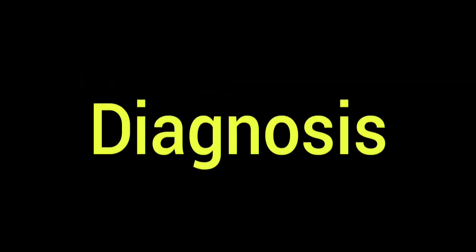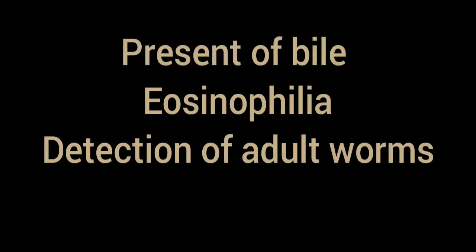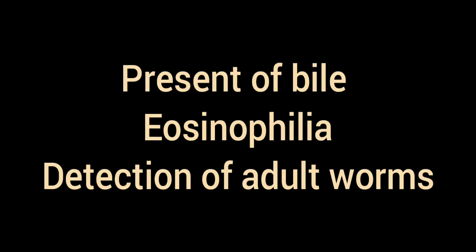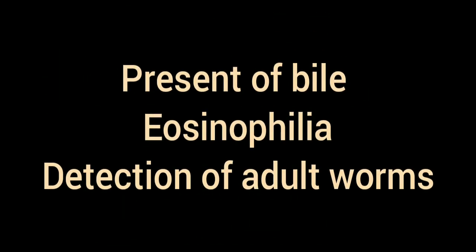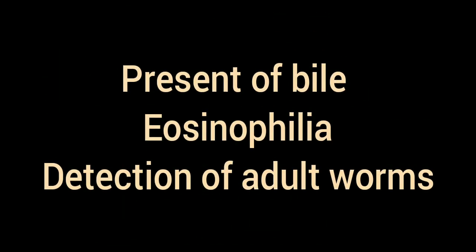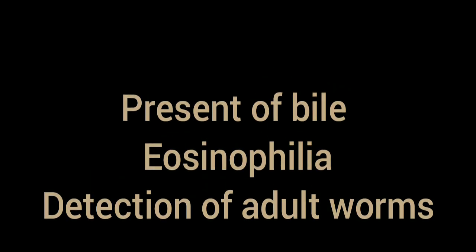Diagnosis: Methods include stool examination for the presence of adult worms, microscopic examination for the presence of bile-stained ova, and blood smear examination for eosinophilia. Detection of adult worms is also used.